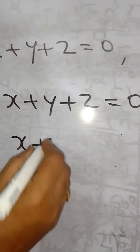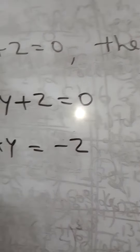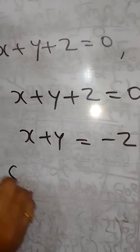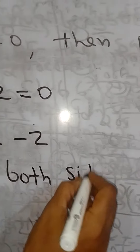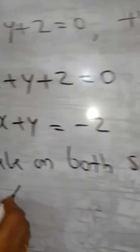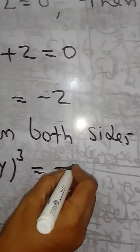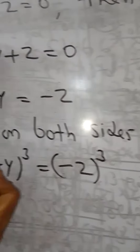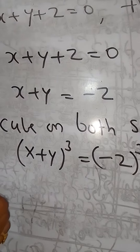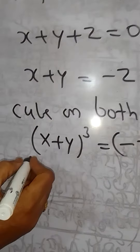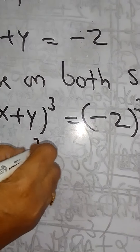From the condition, x plus y equals minus z. Cubing both sides: x plus y whole cube equals minus z whole cube. This uses the identity (a+b)³ = a³ + b³ + 3ab(a+b), where a is x and b is y, giving x cube plus y cube plus 3xy into x plus y equals minus z cube.